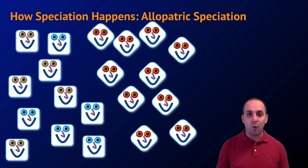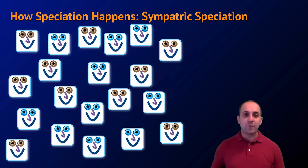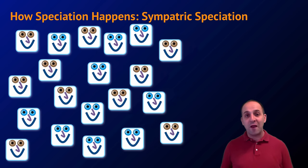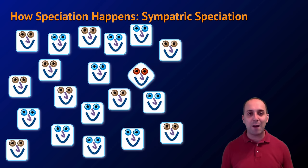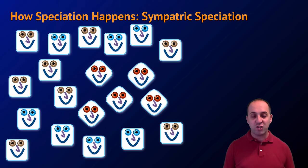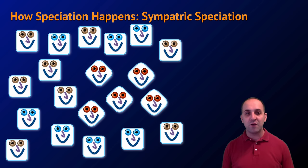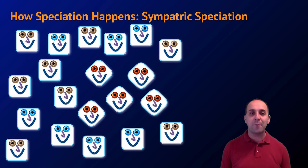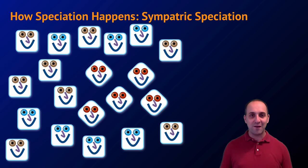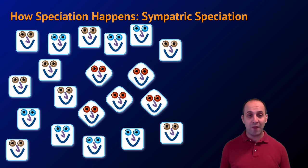Sympatric speciation is a little bit different. 'Sympatric' means 'in the same place.' This occurs where the speciation event happens even though the population is still in contact with each other. For whatever reason, a series of changes occur in some individuals that cause them to be reproductively isolated from the rest of the population, and as a result they are now separate species even though they were never physically separated.